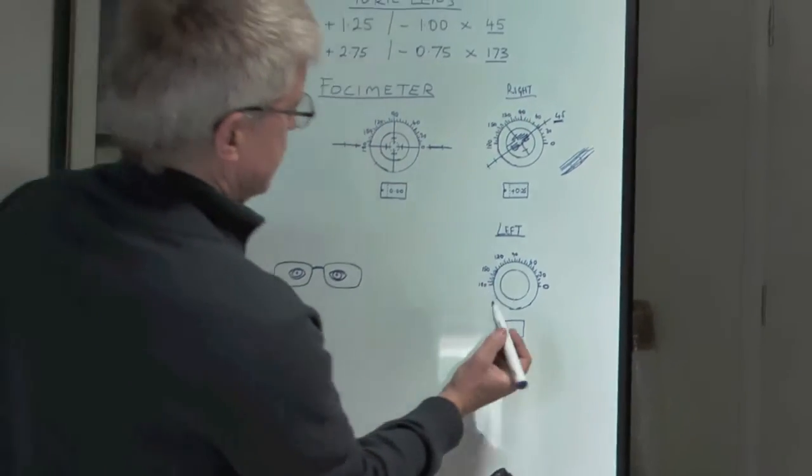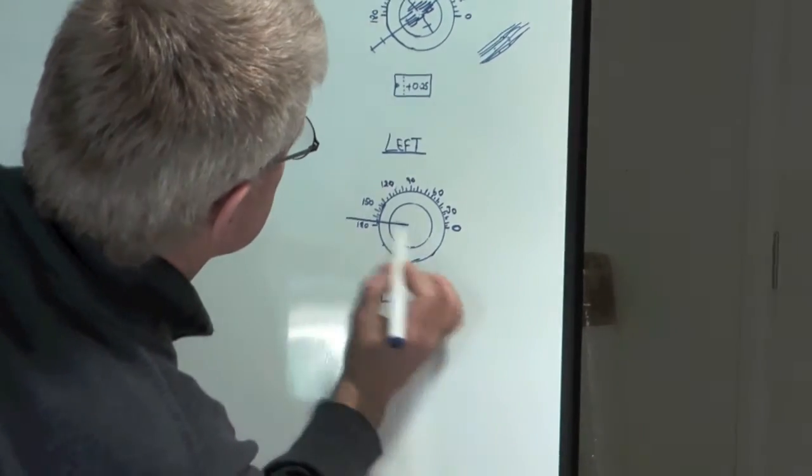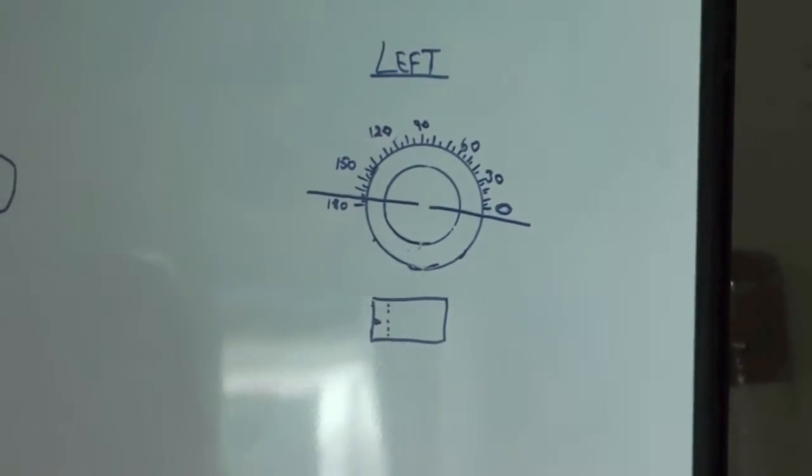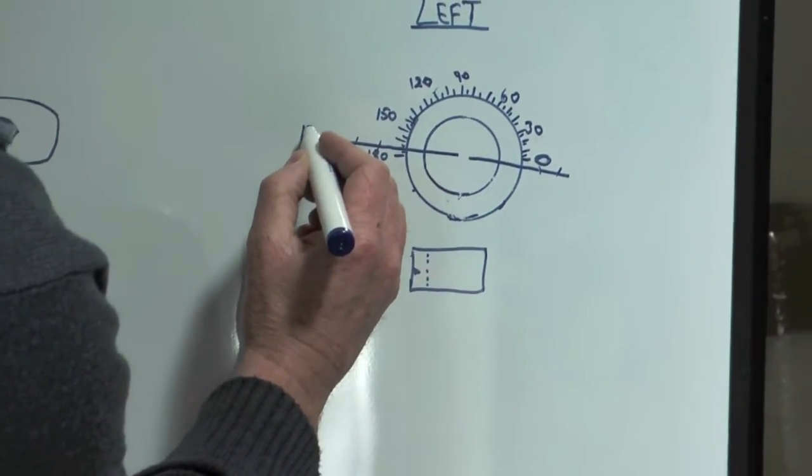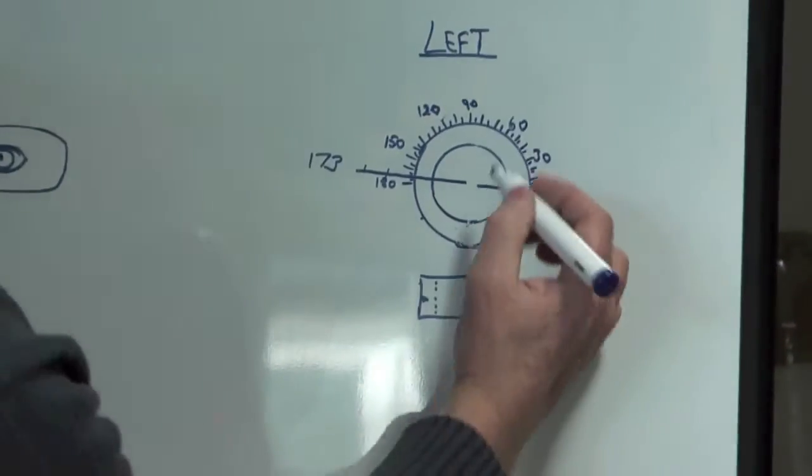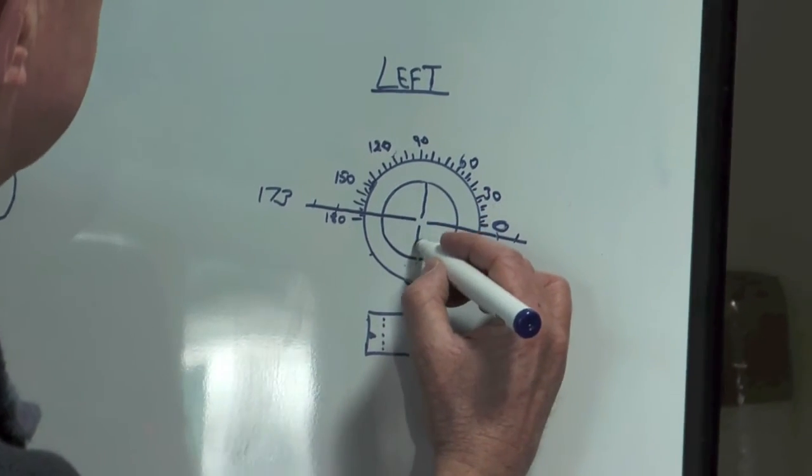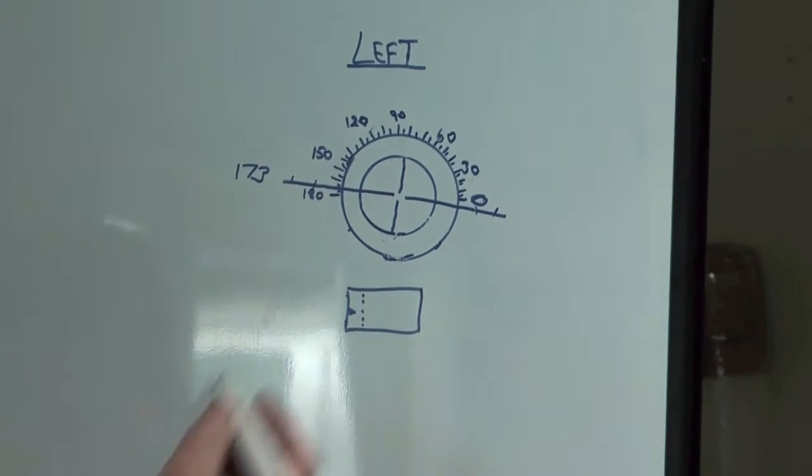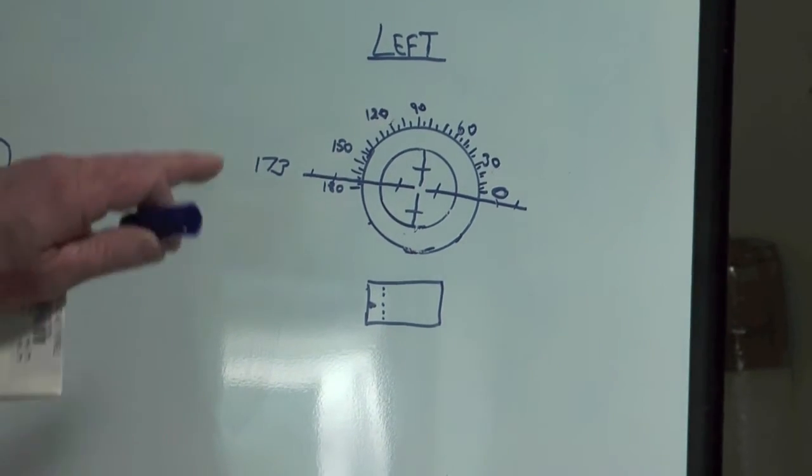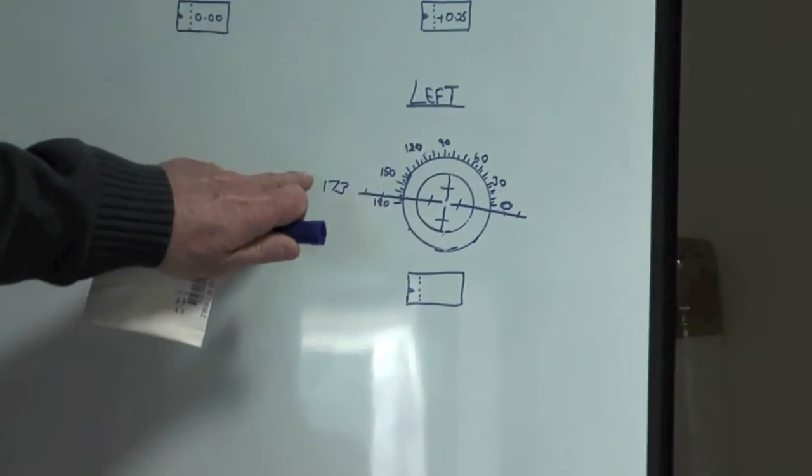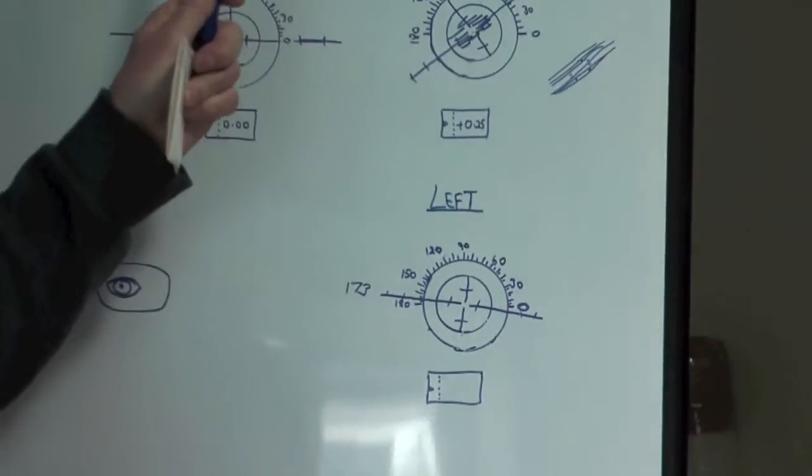When I look through there, we've got a line going from there like that, just below the zero. This is axis 173. If we go 90 degrees to that, we've got 83. This is always 90 degrees to each other. When you look through the focimeter now for the left eye, I've set it with the axis at 173, which is what we want.